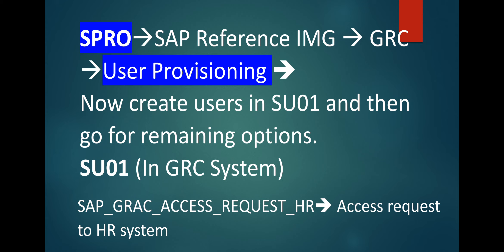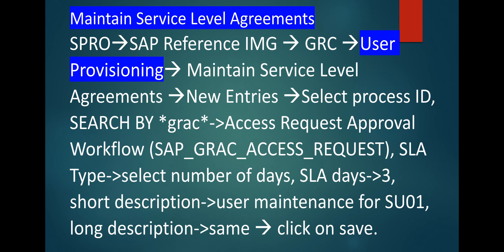First we need to check whether the user is created or not in SU01, and if yes, then we can go further with user provisioning settings. SAP GRC Access Request HR is for access request to the HR system. Now, the user is already created in SU01, so we can maintain other tabs and other things in user provisioning.